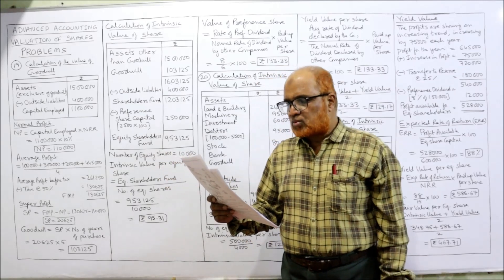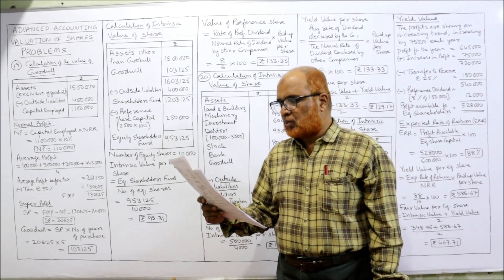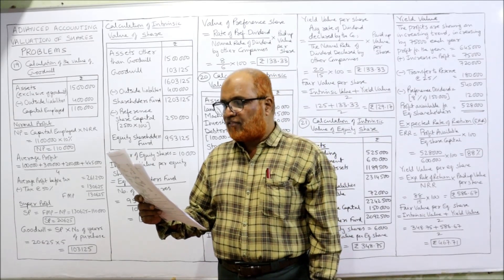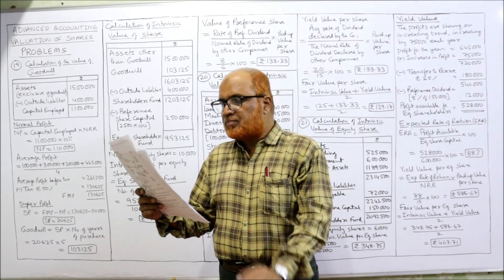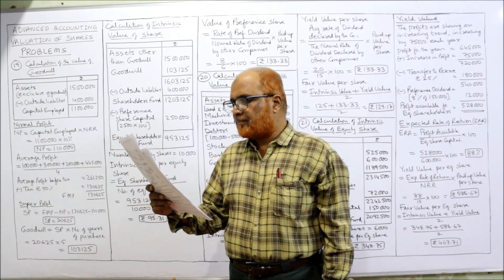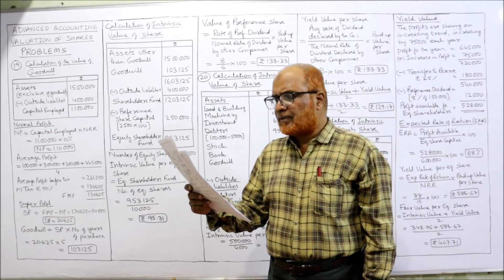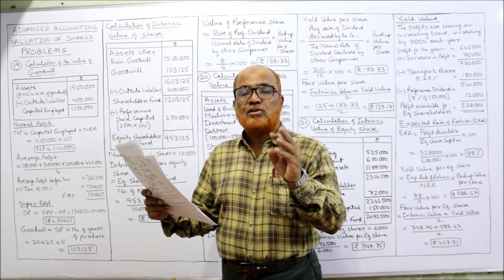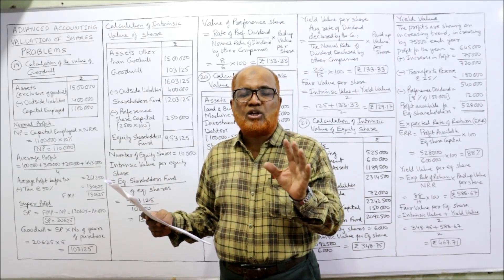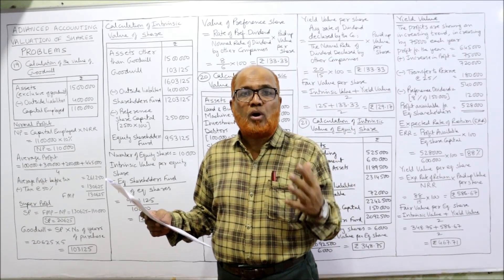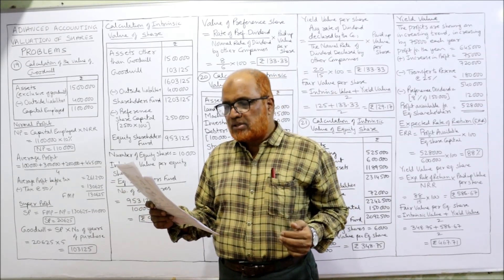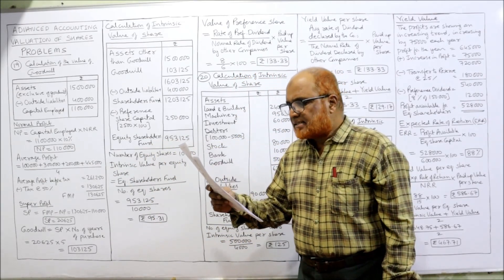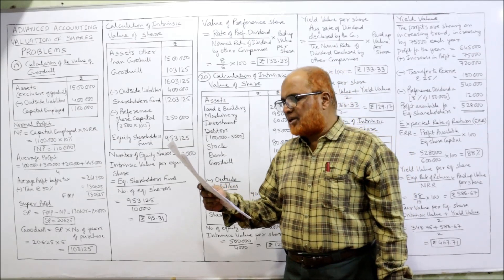The profits of XY Limited for the previous five years were: ₹1 lakh, ₹3 lakh, ₹5,000, ₹2 lakh, and ₹4 lakh 45,000. The ₹5,000 in year three is an abnormal profit and should not be considered when calculating average profit. So we take the average of the remaining four years. Assets and liabilities are accepted at balance sheet figures.